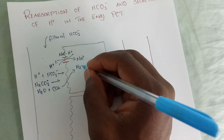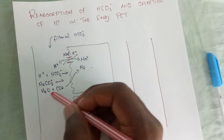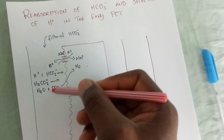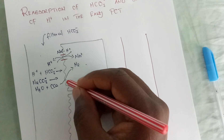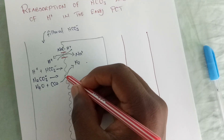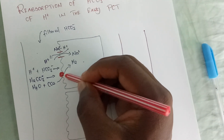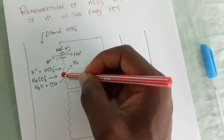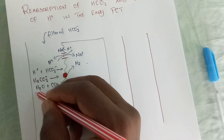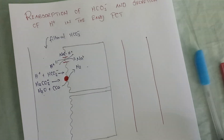An important detail is that the reaction where weak carbonic acid is converted to water and carbon dioxide is actually catalyzed by a brush border carbonic anhydrase enzyme. Remember, this is the brush border of the cells, and this enzyme is the one catalyzing this reaction.